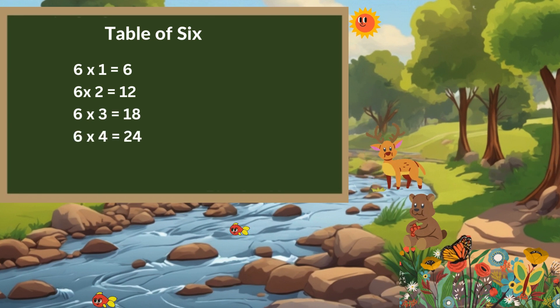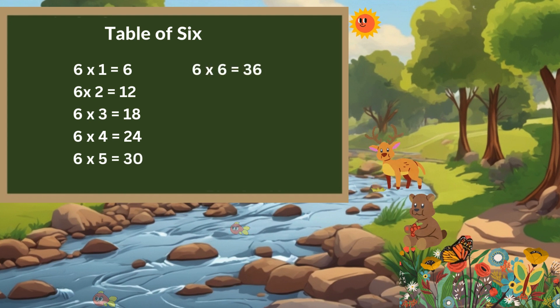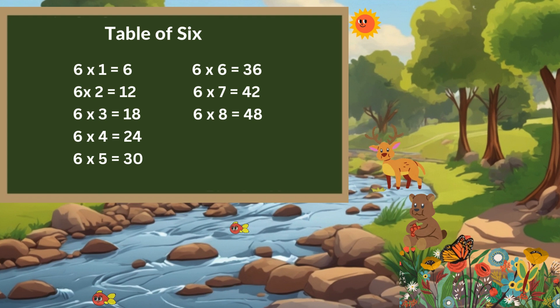6 times 4 is 24. 6 times 5 is 30. 6 times 6 is 36. 6 times 7 is 42. 6 times 8 is 48.